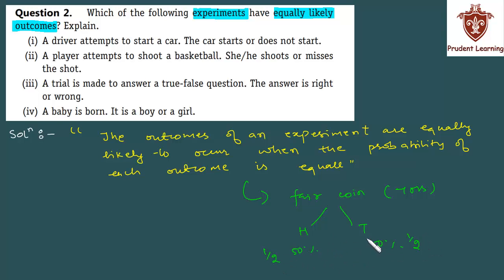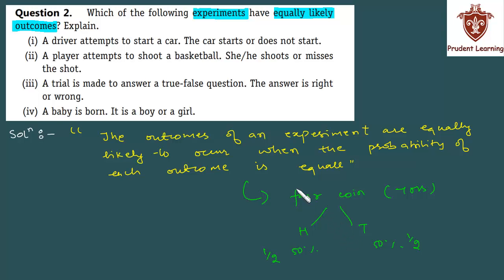Since दोनों outcome की probability equal है — half-half, या percent में 50-50% — इसलिए अब हम बोलेंगे कि यह जो outcomes हैं वो equally likely हैं. I hope आपको समझ में आ गया होगा, अब मैं given sections पर जाता हूँ.